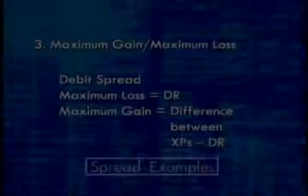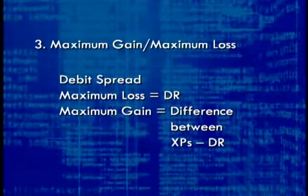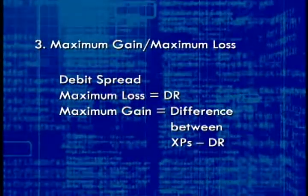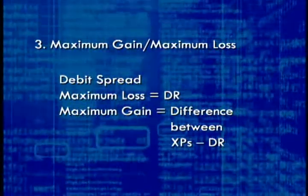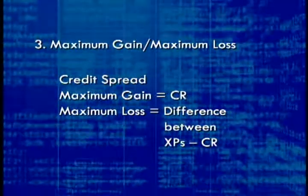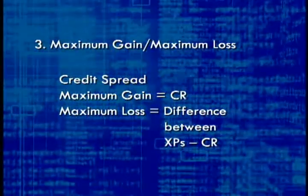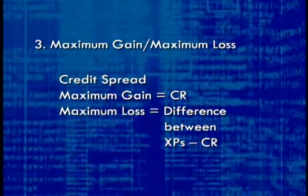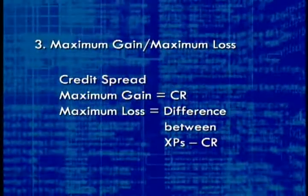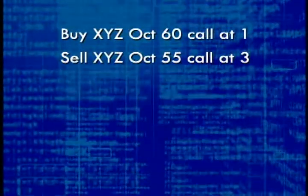The first step in determining maximum gain and maximum loss is to figure out if you have a debit spread or a credit spread. For a debit spread, the maximum loss equals the debit itself. The maximum gain is the difference between the strike prices minus the debit. For a credit spread, the credit is the investor's maximum possible gain, and the maximum possible loss is the difference between the strike prices minus the credit.